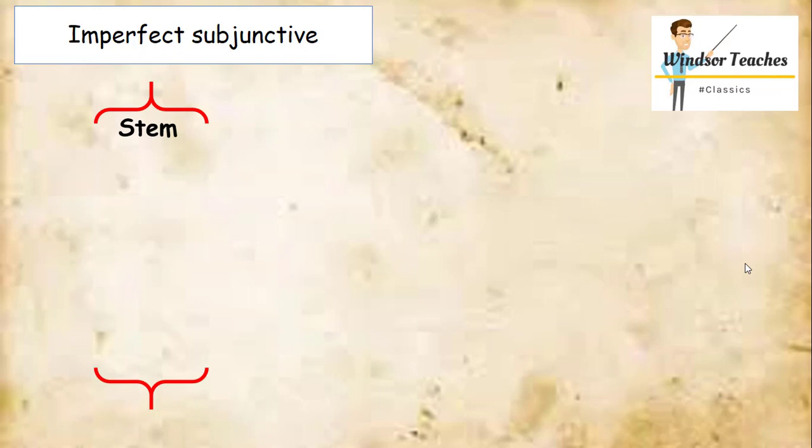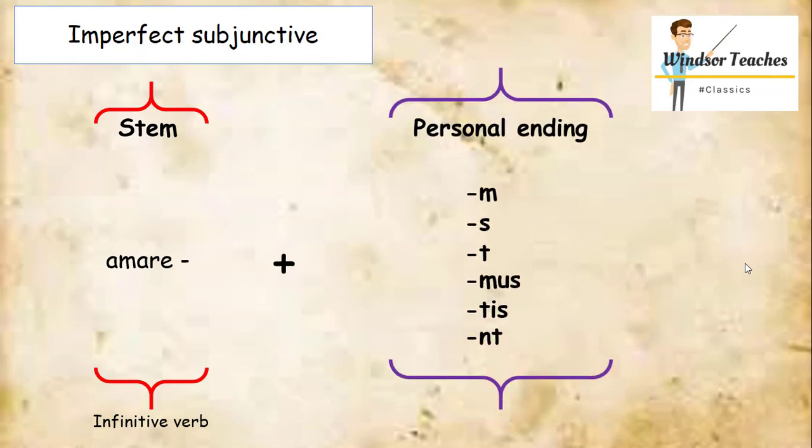For the imperfect subjunctive, it's a little bit simpler than the pluperfect. So we're still going to have our stem from amo, except it's going to be the infinitive, amare. Then we're going to simply add on our personal ending, which are the same as with the pluperfect subjunctive, except there is no isse part in the middle, and the stem looks much more like an infinitive verb than anything else.